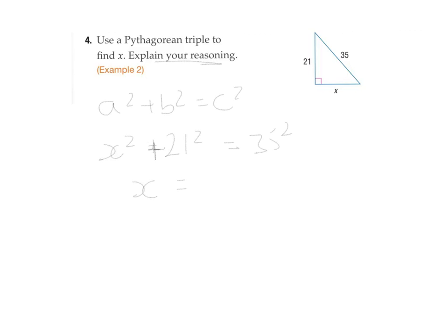So x is going to equal, and I'm going to put it in calculator form, 35 squared minus 21 squared. So if you put it into your calculator, it will do it for you. So x is going to equal 28.